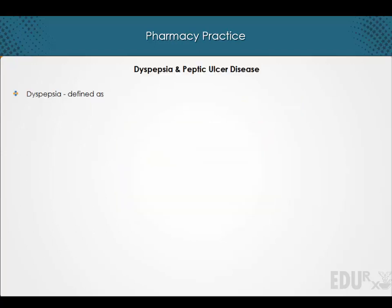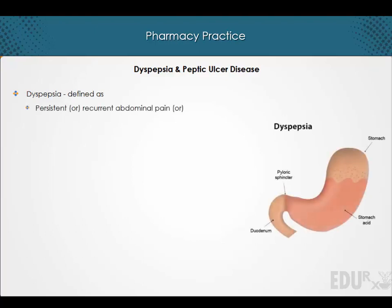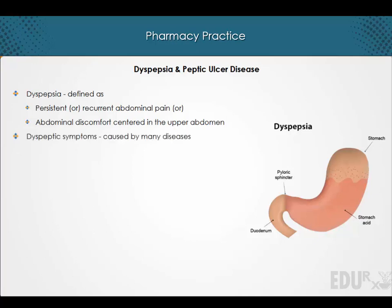Welcome to a lecture on dyspepsia and peptic ulcer disease. Dyspepsia is defined as persistent or recurrent abdominal pain or abdominal discomfort centered in the upper abdomen. Many diseases cause dyspeptic symptoms, including peptic ulcer disease, gastroesophageal reflux disease, gastric cancer, and biliary tract disease.